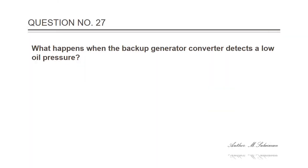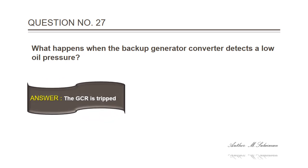Question 27: What happens when the backup generator converter detects a low oil pressure? Answer: The GCR is tripped.